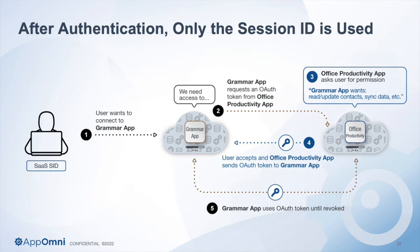It's going to ask me: this app is trying to connect to your office environment — it's asking for read/update contacts, sync your data, read your emails. And I'm going to click yes. When we install these applications and they present their bill of privileges, it's not multiple choice. It's a yes or no. You can't pare those permissions away — you either say yes and the application installs, or you say no and it doesn't. So as a user, I don't have much choice, but I really want this grammar app. Once I accept, an OAuth token is going to be created, and my office productivity SaaS application is going to give one of my OAuth tokens to the grammar app.